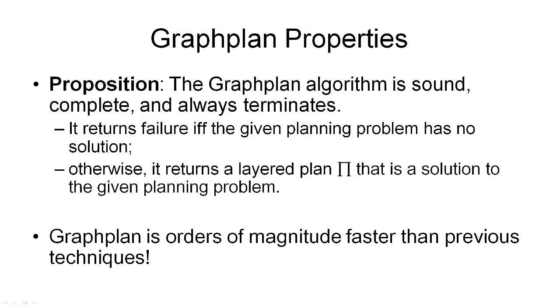And here are a few final words about properties of the Graphplan algorithm. In short, these properties are that the Graphplan algorithm is sound, complete, and always terminates. So this means that the Graphplan algorithm returns failure if and only if the given planning problem has no solution. Otherwise, it will return a layered plan, the structure we've described before, that is a solution to the given planning problem.